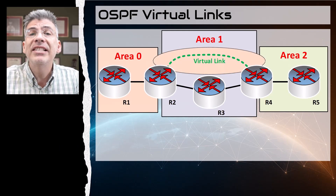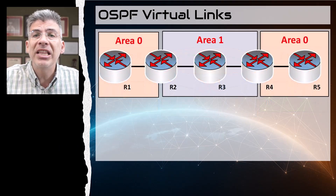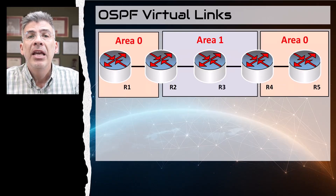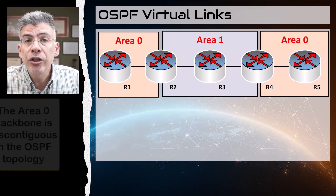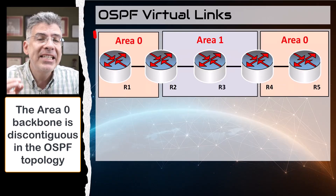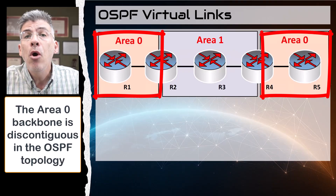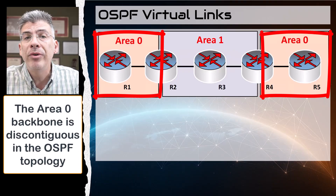Here is another topology that violates this rule. Here we have two discontiguous area zeros, or backbone networks.